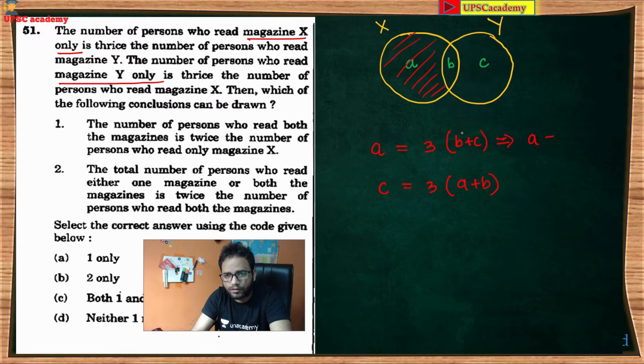Isko jab minute ke liye zero bhi maan lete hai, b ko agar hum zero bhi maan le tab bhi kya hoga? a greater than 3c hoga nahi hoga. a greater than 3c lekin b ki kuch na kuch value hogi, 3c se bhi zyada hoga. Yaha se agar dekhe to c greater than 3a.